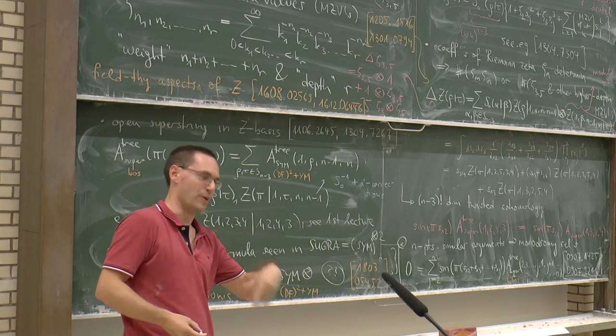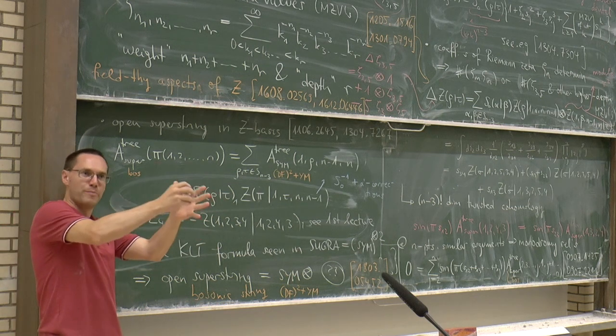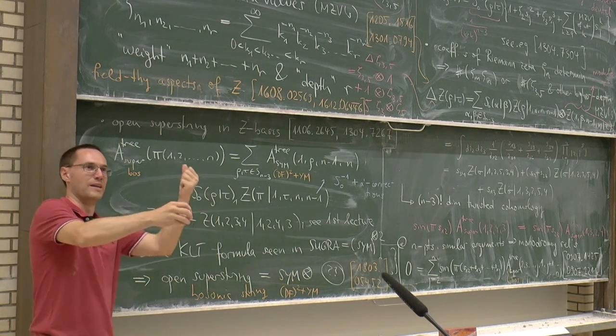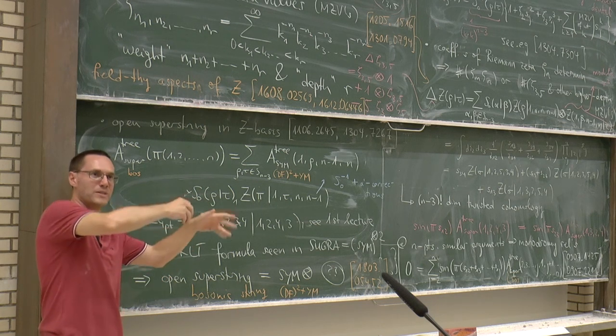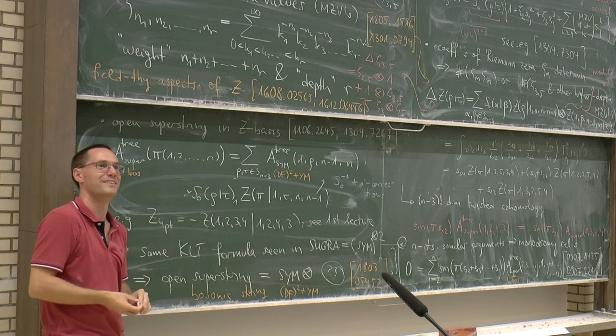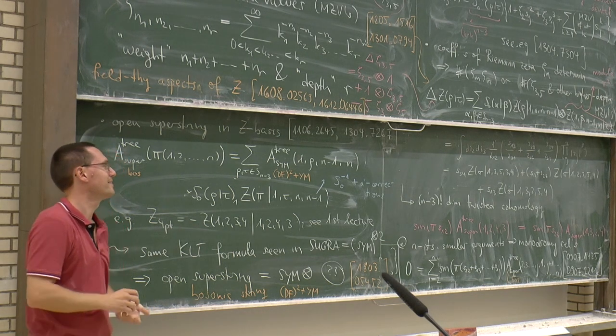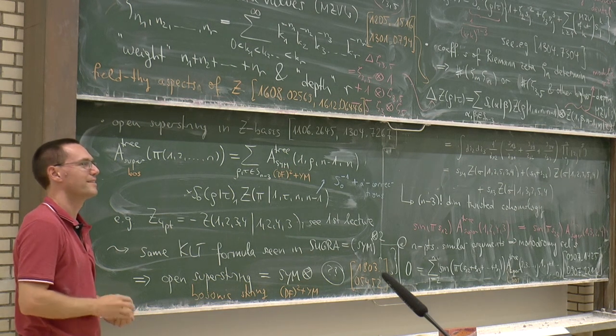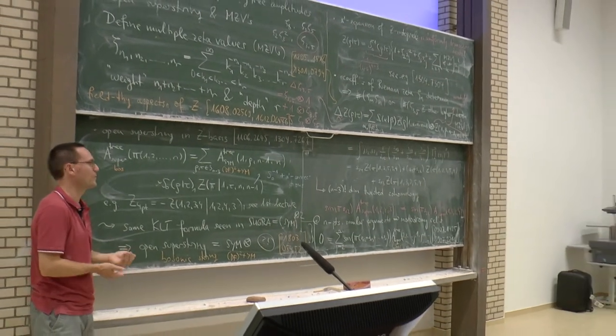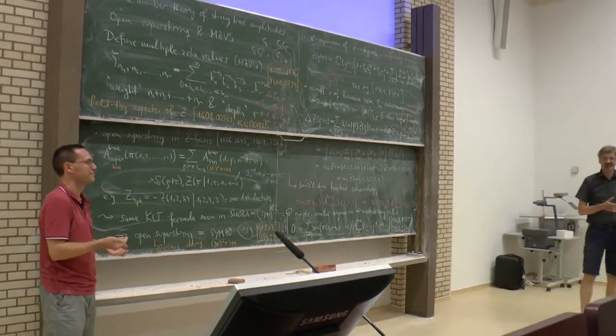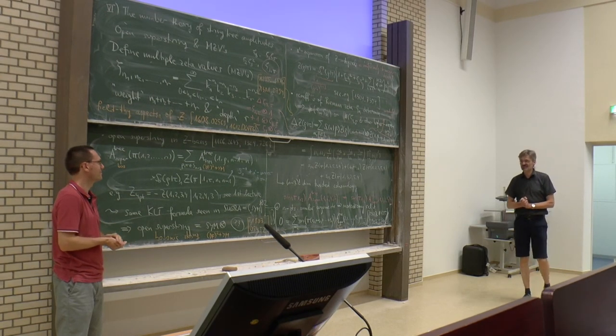At genus 1, there's a similar story. There are elliptic analogs of multiple zeta values that come from integrating out the open string punctures. These are multi-valued functions, elliptic polylogarithms. You need to make them single-valued. The new quality at loop level is also modular transformations are part of the discussion whether an expression is single-valued or not. At one loop, you're obliged to combine elliptic polylogarithms with their complex conjugates in a way such that they become modular forms. Let's thank Oliver again for this beautiful set of lectures. Thank you.